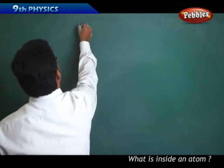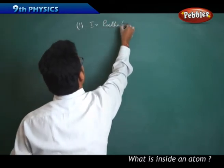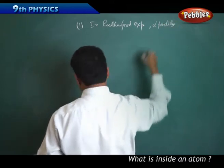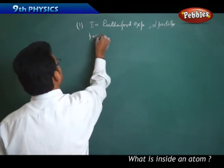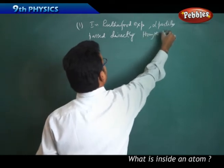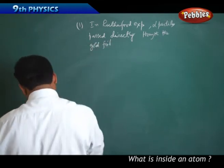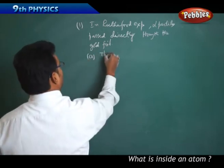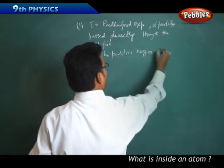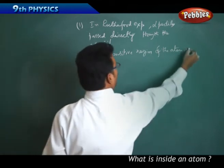Number one: In Rutherford experiment, alpha particles passed directly through the gold foil. So the gold foil - that means option A: the positive region of the atom is very small.